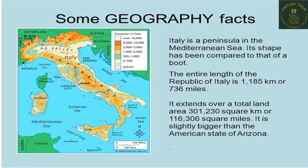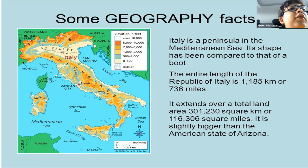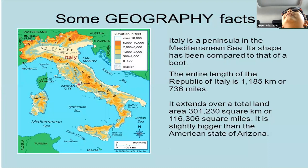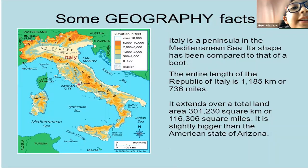The shape of Italy's map is often compared to a boot. Very near to it, or in fact within it, is Vatican City. Can you spot some of the neighboring countries?